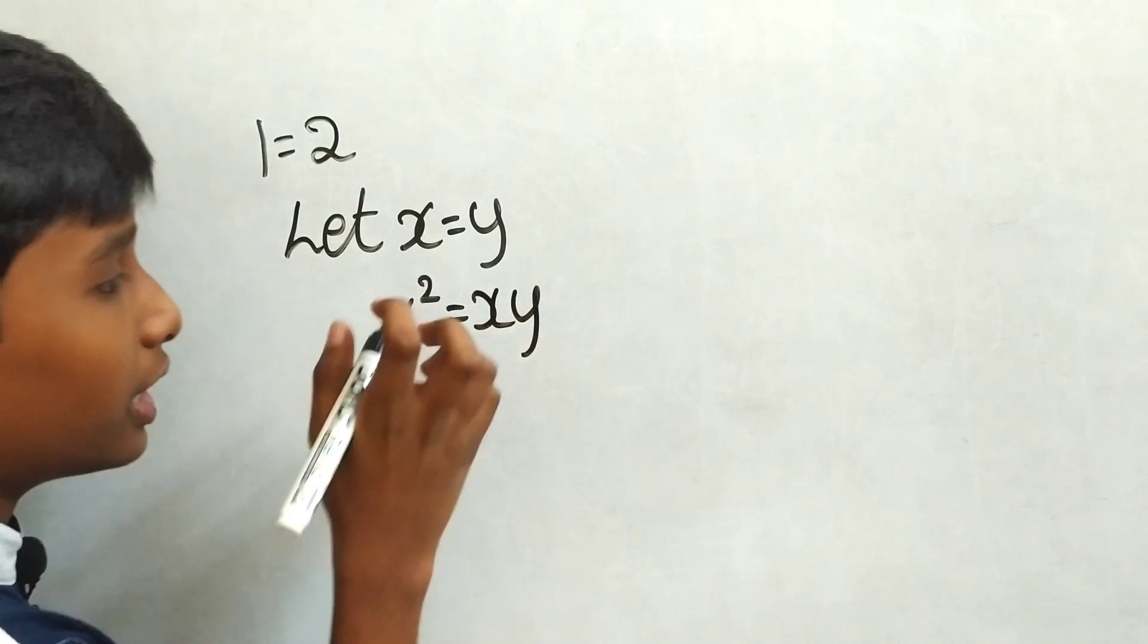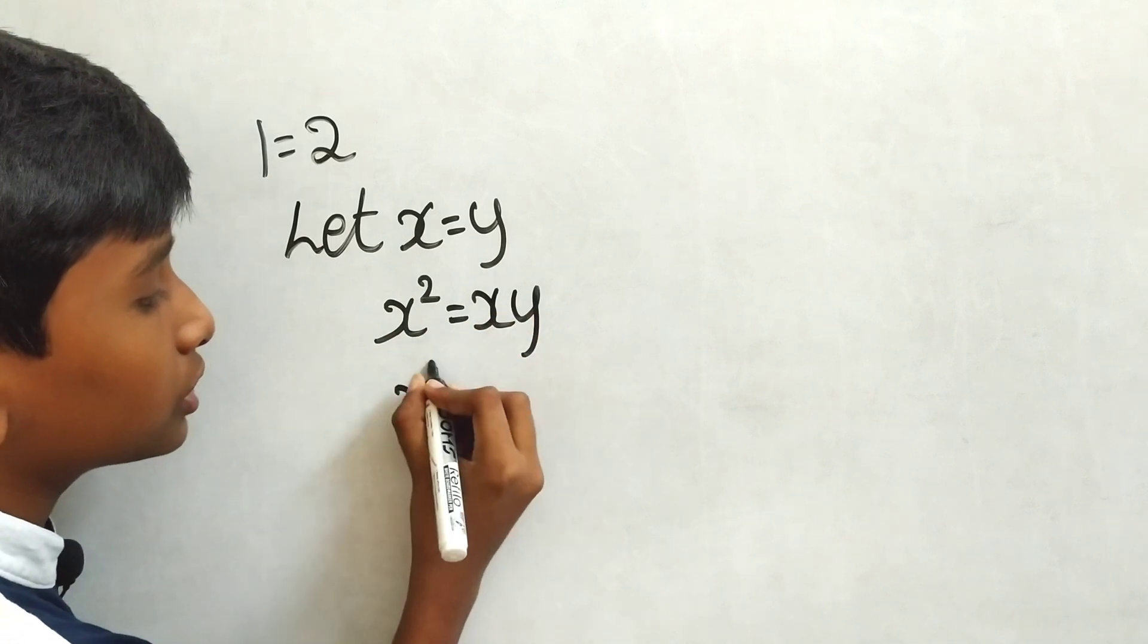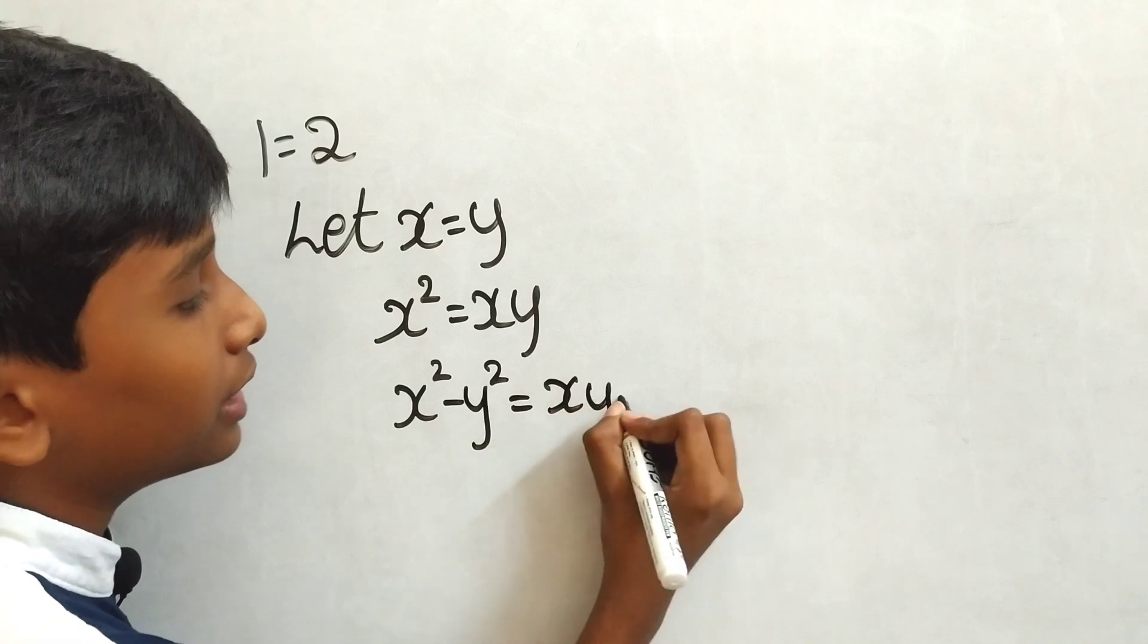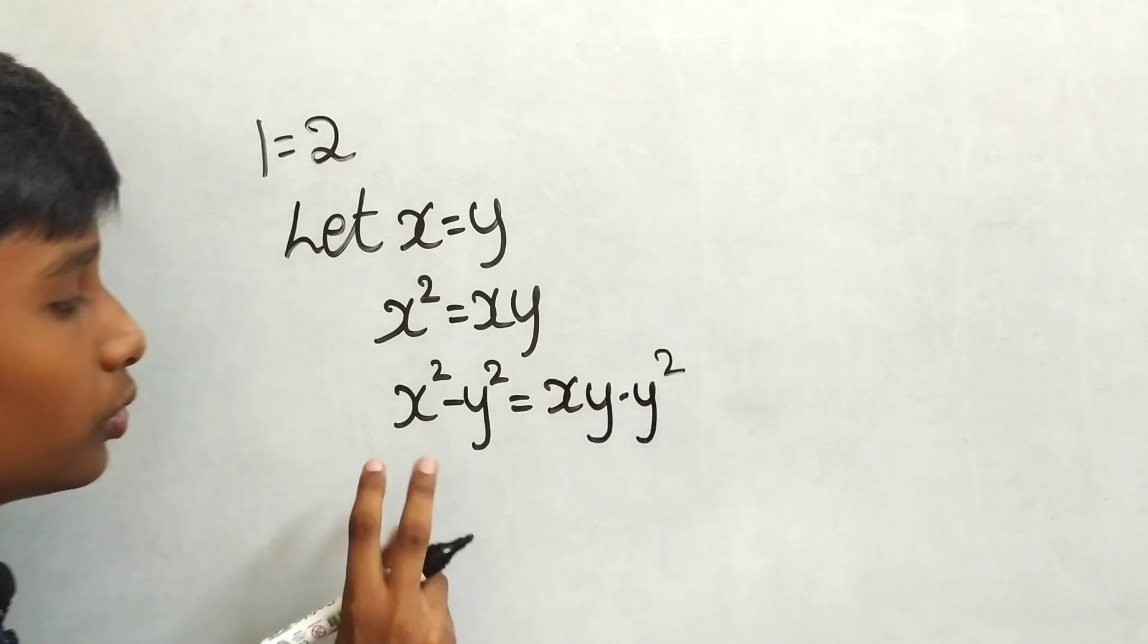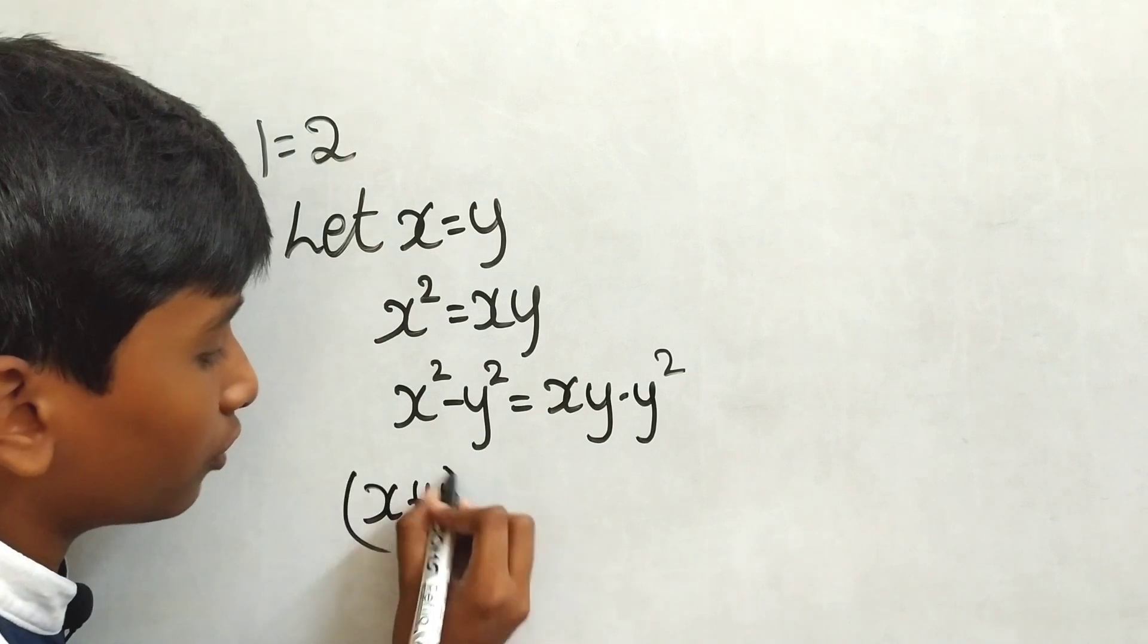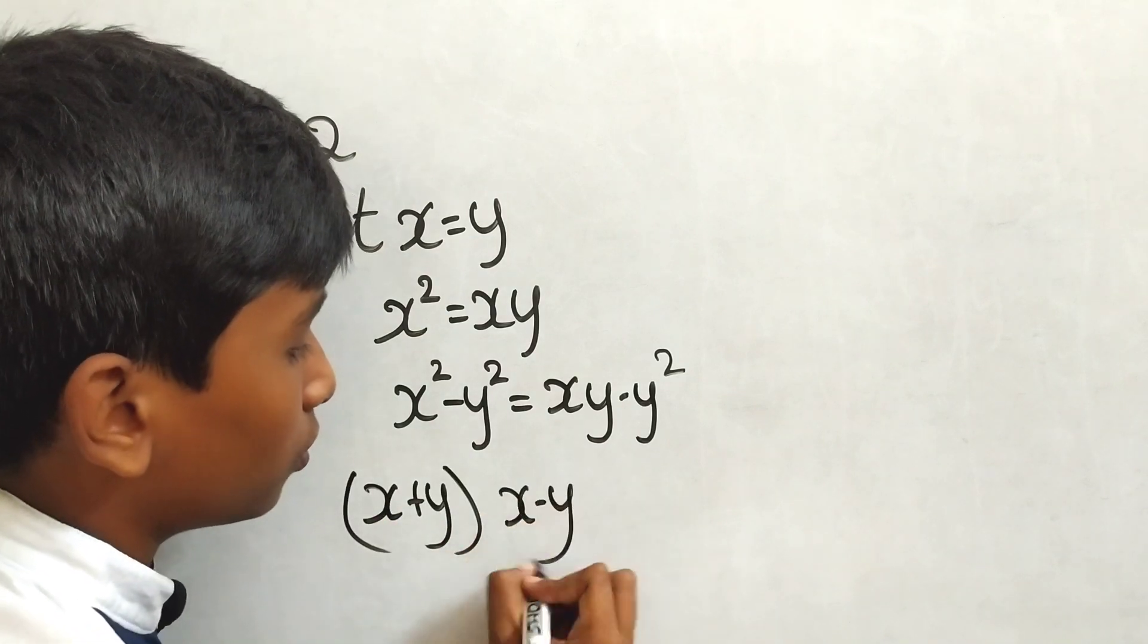Subtract y² from both sides. Then x² minus y². We know the formula: x² minus y² equals (x plus y)(x minus y).